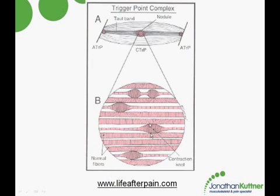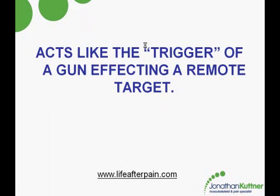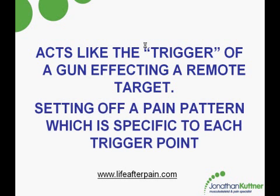That's called a contraction knot, and they all come together to form this trigger point complex. The trigger is called a trigger because it acts like the trigger of a gun — when you pull the trigger of a gun, bang, something happens in the distance. And so what happens is the trigger point sets off a pain pattern which is specific to each trigger point, and there's this whole system throughout the body.